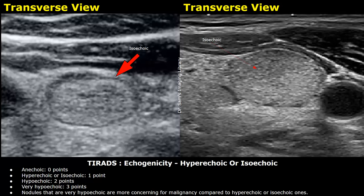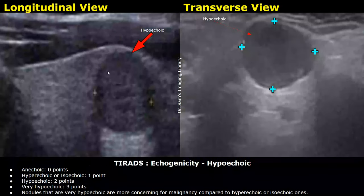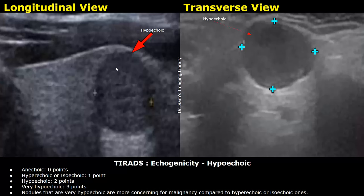Hypoechoic nodules are given two points because they are more concerning than anechoic, hyperechoic, or isoechoic nodules. Their echogenicity is less than that of normal thyroid tissue — they appear darker, usually with a dark gray color.